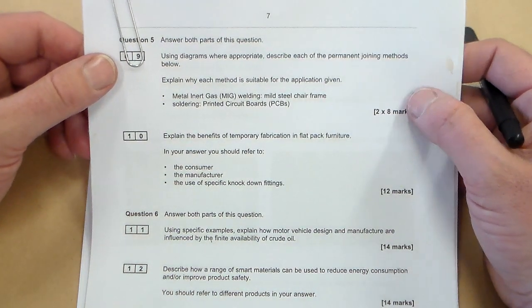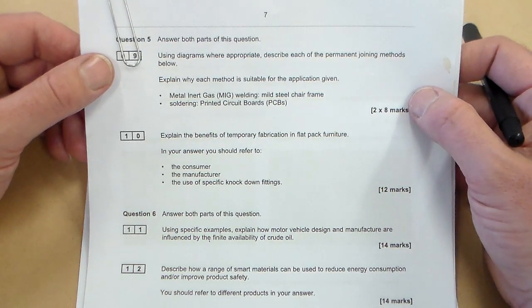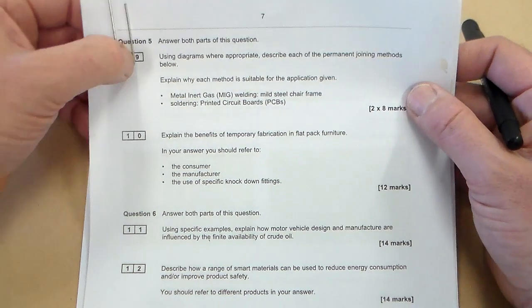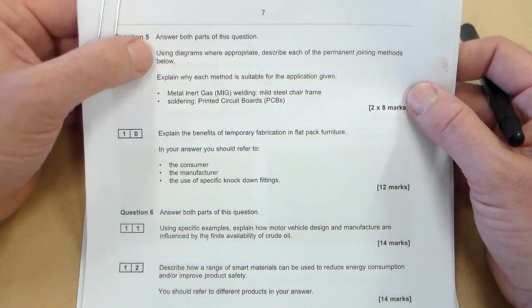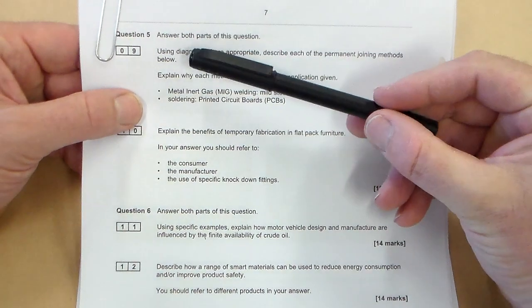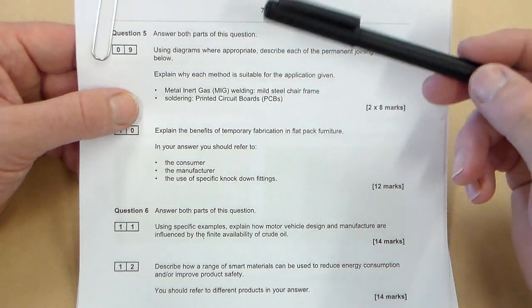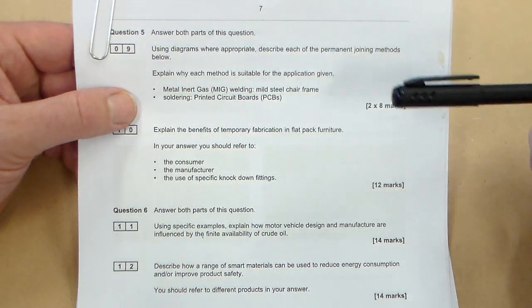Okay and welcome to Mr. Ridley's product design. We're looking at this question, a PROD 3 question from 2016. We're looking at question 5, and it says answer both parts of this question using diagrams where appropriate. Describe each of the permanent joining methods below and explain why each method is suitable for the application given.